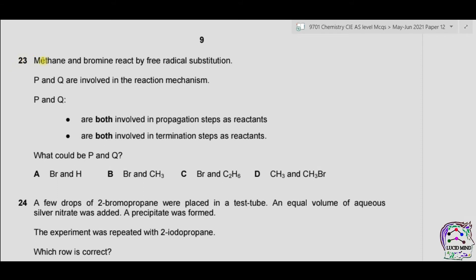Question 23. Methane CH4 and bromine react by free radical substitution. P and Q are involved in the reaction mechanism — both involved in propagation steps as reactants, and both involved in termination steps as reactants. What could P and Q be?